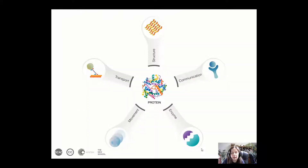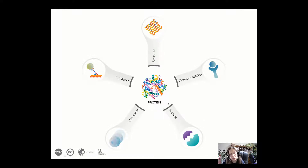Proteins play diverse functions in the human body. Some proteins act like enzymes. Some are important in communication — for example, receptor proteins, such as the ACE2 receptor we talked about in this class. Some proteins are important in structure, some in transport, and some in movement. This slide shows the five different functions of proteins. You don't have to memorize it; it just explains that proteins are crucial for all kinds of cellular function and maintenance.